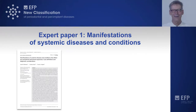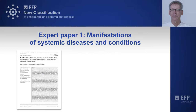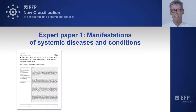Let's come to the first topic: Manifestations of Systemic Diseases and Conditions. This paper is actually a great source of information. The authors and experts did a fantastic job of gathering all available information, screening the literature worldwide. Some of these entities are very rare, so there are only case reports available, and it's all in this paper. If you have such a patient, you can go into this paper and get the info you need.